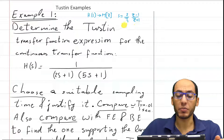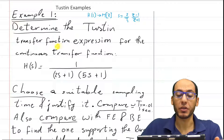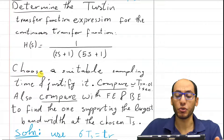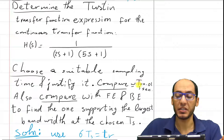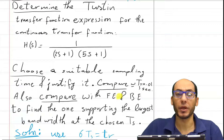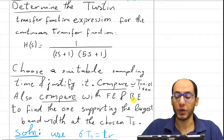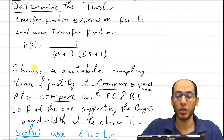In this problem we would like to determine the discrete time transfer function that corresponds to the Tustin discretization of the continuous function H(S). It's asking us to choose a suitable sampling time and justify it, compare it to the case when Ts equals 0.01 seconds, as well as compare it to the forward Euler and backward Euler examples, which we have already solved before.